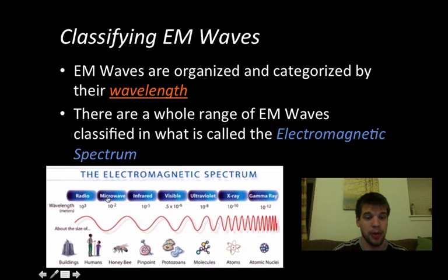It goes radio, microwave, infrared, visible light, ultraviolet, x-ray, and gamma ray. That is the order of decreasing wavelength. That is what we call the electromagnetic spectrum. We're going to look at that again in a second.